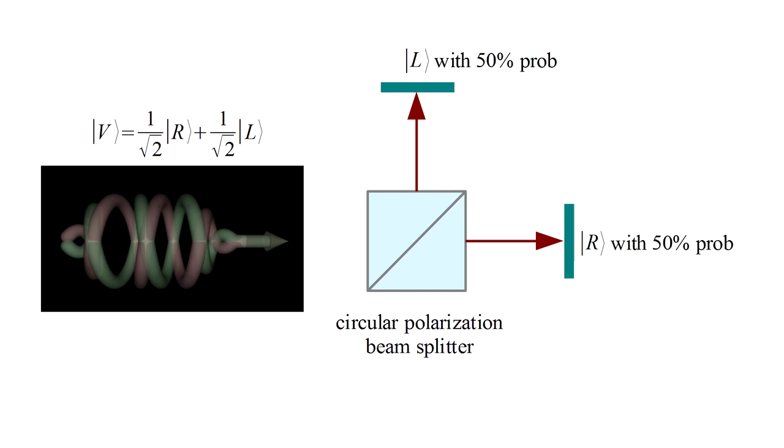And of course, after the measurement, we know which state it is with 100% certainty. This is an example of wave function collapse. It's not described by the Schrodinger equation. It's a special peculiar formalism we have to use to describe quantum mechanical measurement.